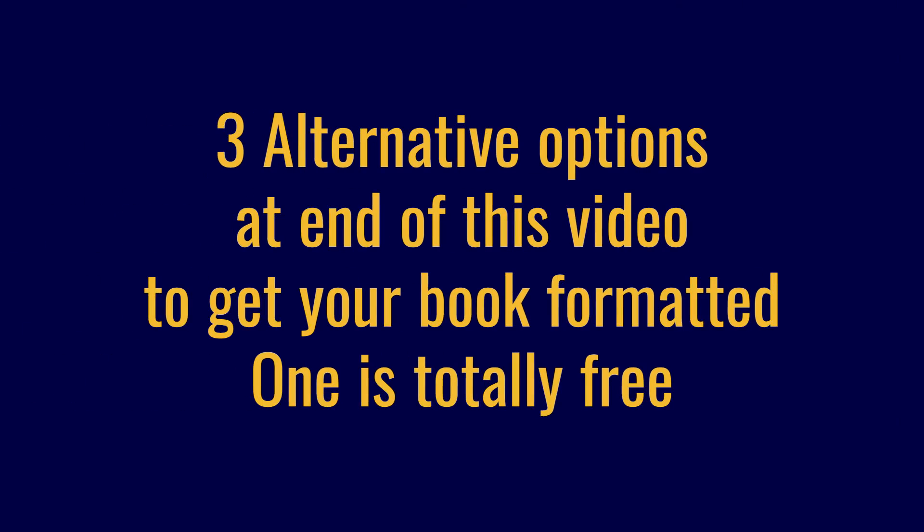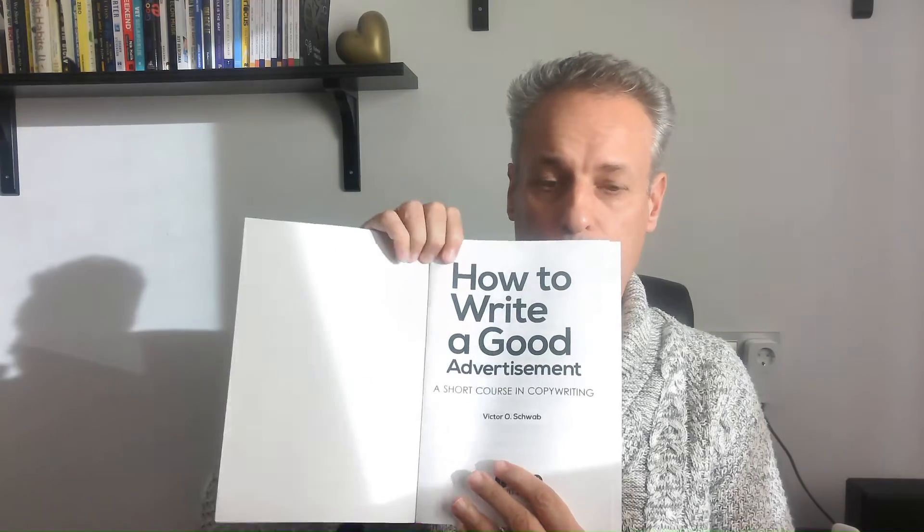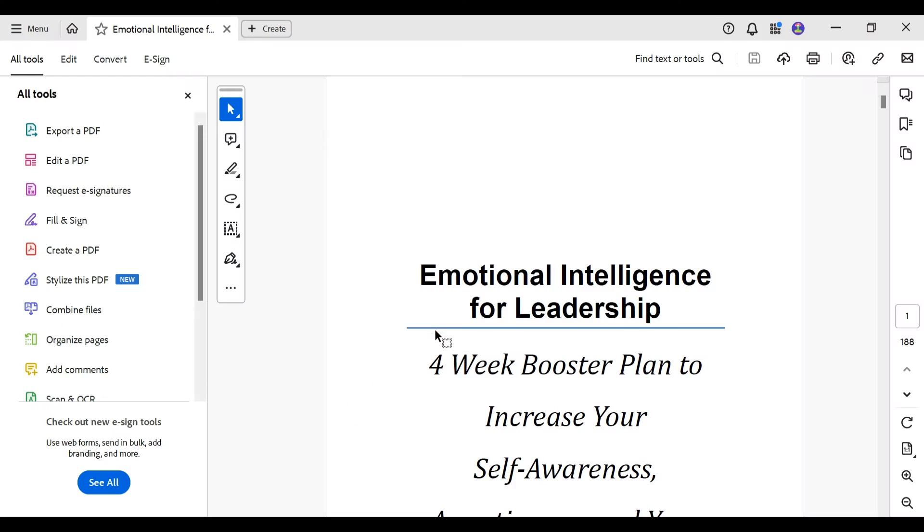I'm going to show you how you can add the gutter margin to this book. And at the end of this video, I will show you three options, and one is totally free, which I recommend instead. So what we're going to do: page one of our book starts on the right, and page one is the odd page. So we're going to move the odd pages to the right — move the text on the odd pages a little bit so we can read it easier. And the even pages we move a little bit to the left. So in Acrobat Reader, we can add the gutter.